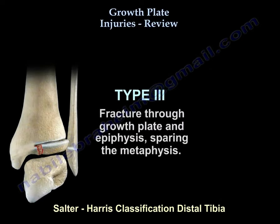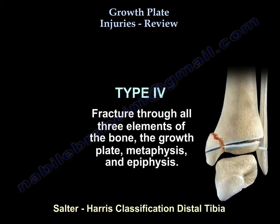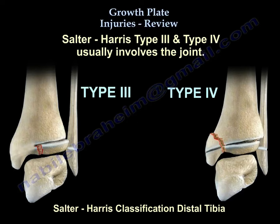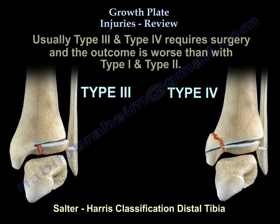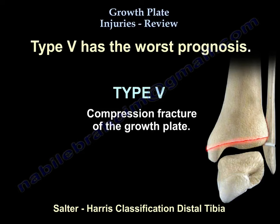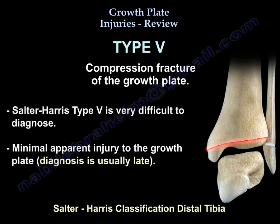Type 3 is a fracture through the growth plate and the epiphysis, sparing the metaphysis. Type 4 is a fracture through all three elements: the growth plate, the metaphysis, and the epiphysis. Type 3 and 4 usually involve the joint, require surgery, and have a worse outcome than Types 1 and 2. Type 5 has the worst prognosis — it is a compression fracture of the growth plate, usually very difficult to diagnose, and the diagnosis is usually late.